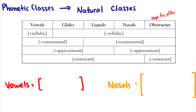We have four main features that we can use to distinguish between all these different natural classes. For instance, if I want to talk about vowels, I could say vowels are plus syllabic, minus consonantal, plus approximant, and plus sonorant. If I want to talk about liquids, I could say they're minus syllabic, plus consonantal, plus approximant, and plus sonorant.